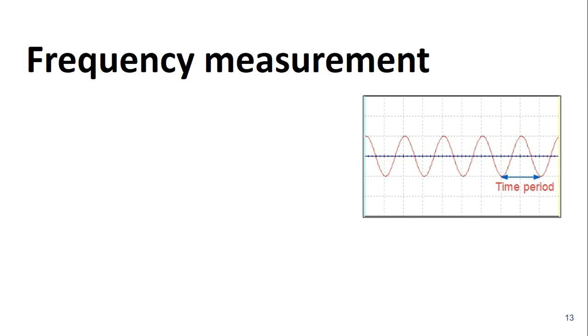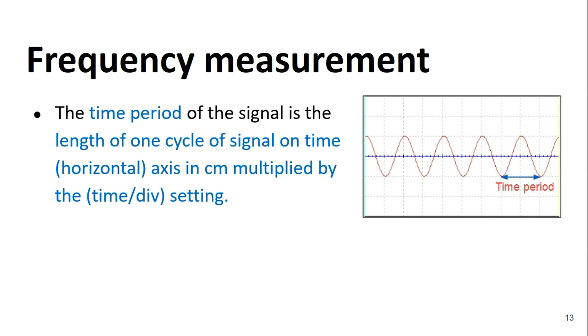Here the picture shown is the sinusoidal waveform displayed on the CRO screen. After the adjustment of voltage sensitivity, band switch, and the time-based band switch, the horizontal length between two successive peaks shown in the figure is noted. That is the time period. Hence the time period of the signal is the length of one cycle of signal on the time axis in cm multiplied by the time per division setting.